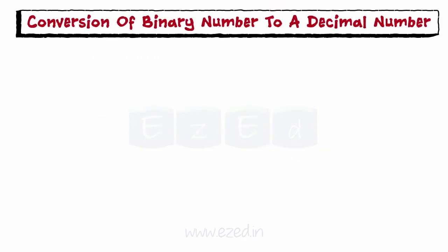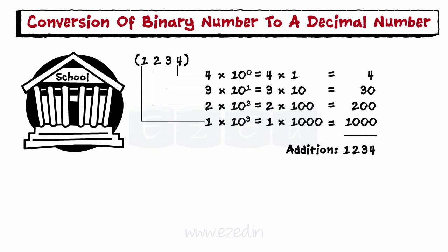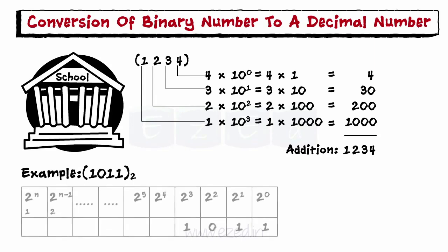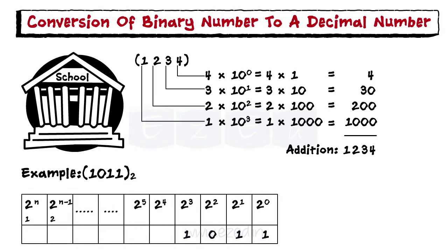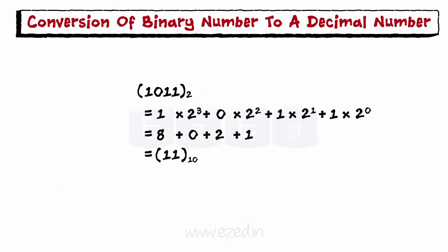This is very similar to what we have studied during our schooling. Any 4-digit number, as in day-to-day life, uses the decimal system with base 10, so we multiply every digit by the respective power of 10. Similarly, let us take another example to convert 1011 to its decimal equivalent. Represent the weight of each digit in the given number using the table, then add up all the powers after multiplying by the digit values, 0 or 1.